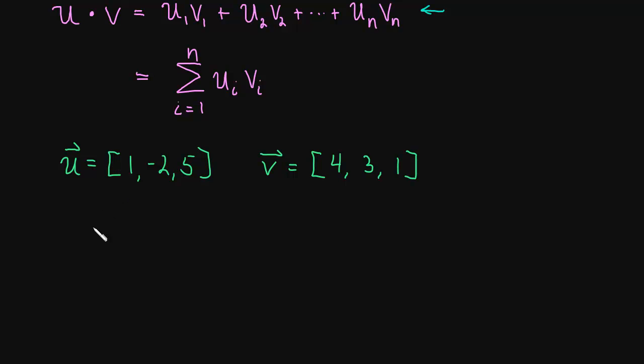Well, we just do exactly what it says. 1 times 4 plus negative 2 times 3 plus 5 times 1. So we get 4 minus 6 plus 5. That looks like 3 to me.